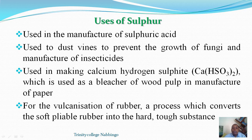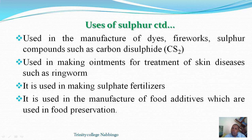Sulfur is used in the vulcanization of rubber — the heating of raw rubber with sulfur — to make the rubber hard, tough, and more durable. Other uses of sulfur include the manufacture of dyes, fireworks, and compounds like carbon disulfide, which is a very important solvent. Sulfur is used in the making of ointments and the treatment of diseases such as ringworm. It can also be used in the manufacture of sulfate fertilizers and as a food additive, because it helps in the preservation of food.